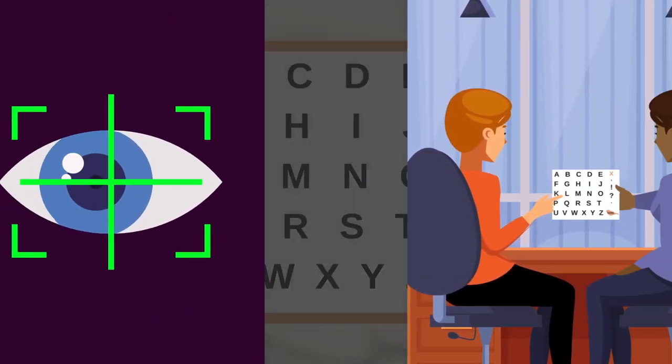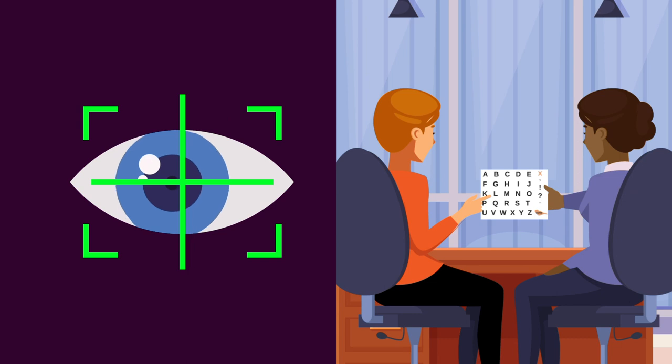Now, a new study using eye-tracking technology suggests that the letter board allows for genuine communication and can be a powerful tool for some autistic individuals who struggle with speech.